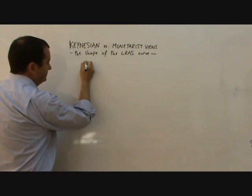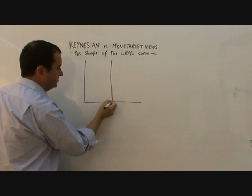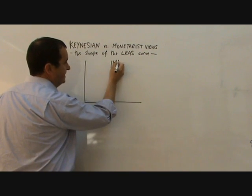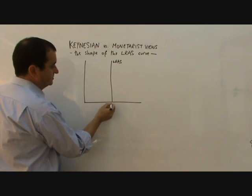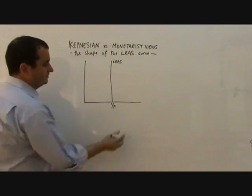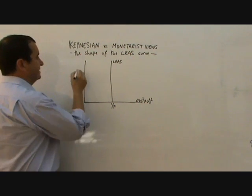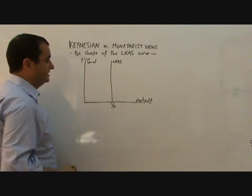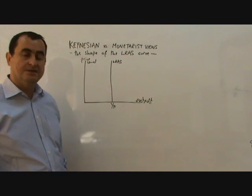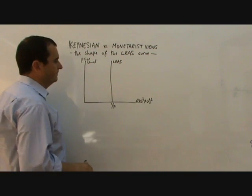In the monetarist view, the LRAS is a vertical line where output is always at the full employment level of output. This is output, national output of the economy, and this is price level. And the output will always be at the full employment level of output because everyone who wants to work will always work.